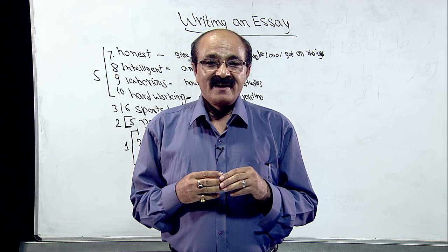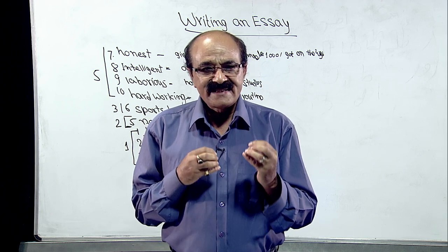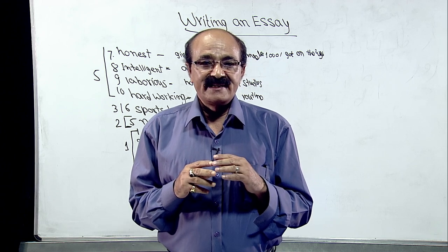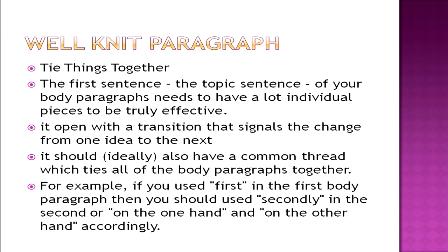Another important thing to keep in mind is to tie things together. All the examples and all the sentences should be well-knit. The topic sentence of your body paragraph needs to have a lot of individual pieces to be truly effective. It should open with a transition that signals the change from one idea to the next, and ideally have a common thread which ties all of the body paragraphs together. For example, if you used 'first' in the first body paragraph, then you should use 'secondly' in the second; or if you use 'on the one hand,' then the next paragraph should begin with 'on the other hand.'